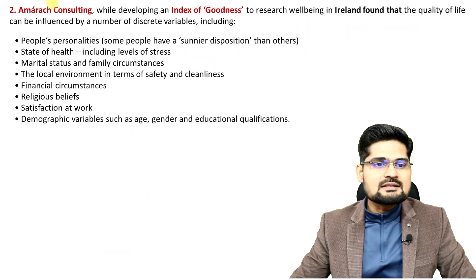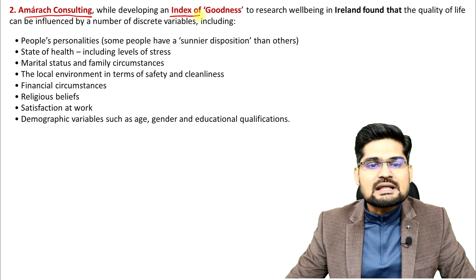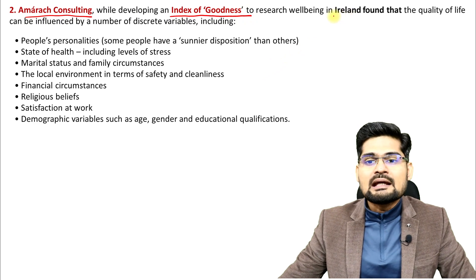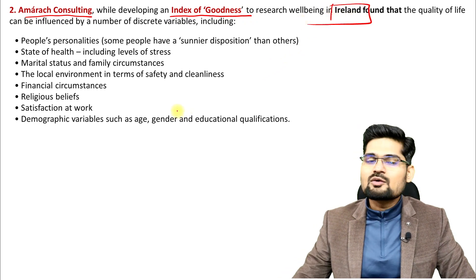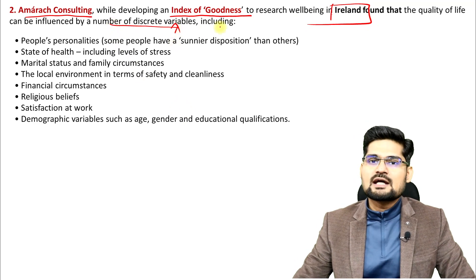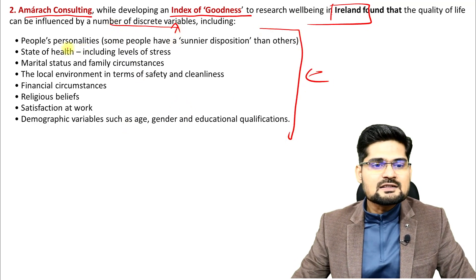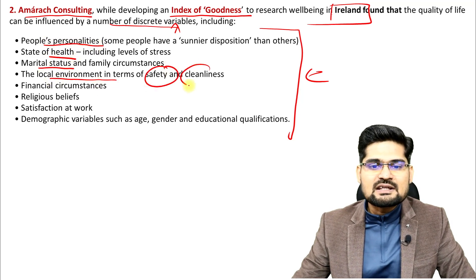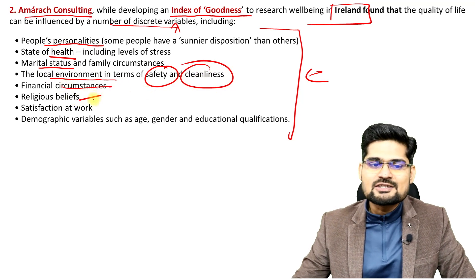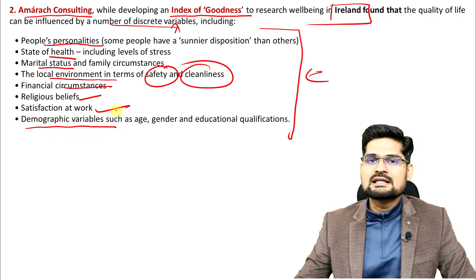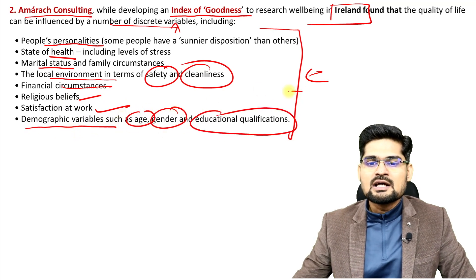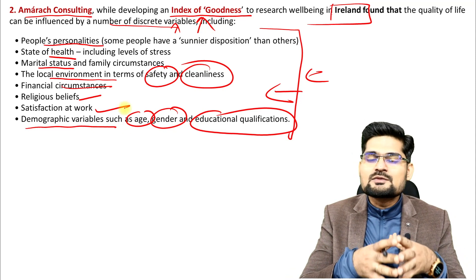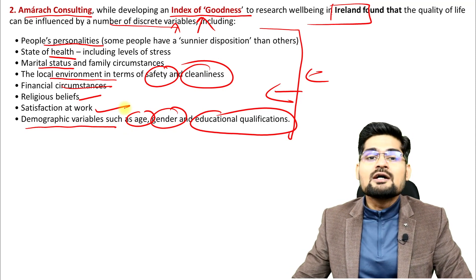Another research is from AMRAC Consulting, which computes an Index of Goodness, focused on well-being and coming from Ireland. They found that quality of life can be influenced by a number of variables: people's personalities, state of health, marital status, local environment in terms of safety and cleanliness, financial circumstances, religious beliefs, satisfaction at work, and demographic variables such as age, gender, and educational qualifications.